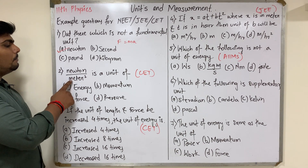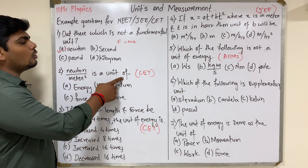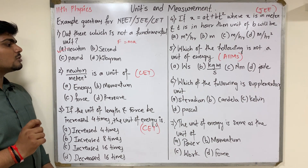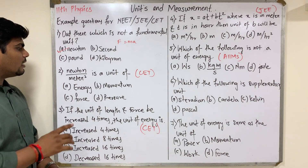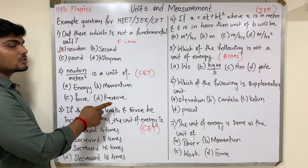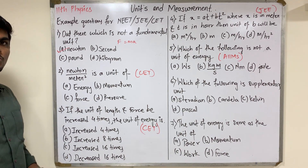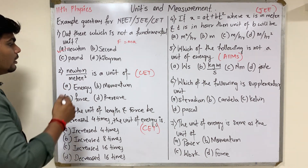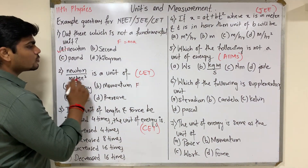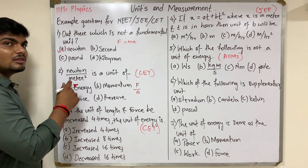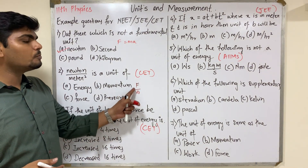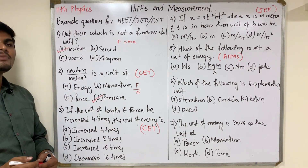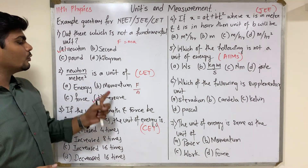Question 2: Newton per meter square is the unit of what? The options are energy, momentum, force, or pressure. Newton is force, and meter square is area. Force per unit area — that is the formula for pressure. So Newton per meter square is the unit of pressure.